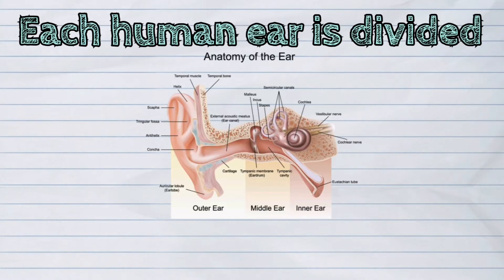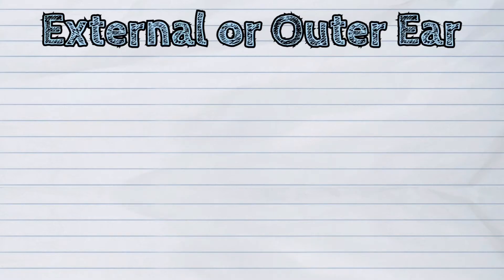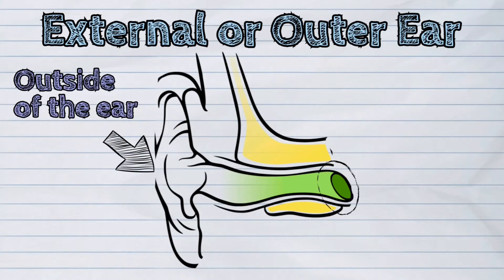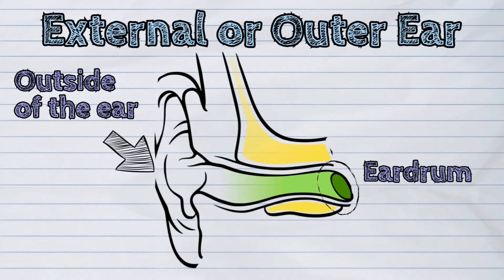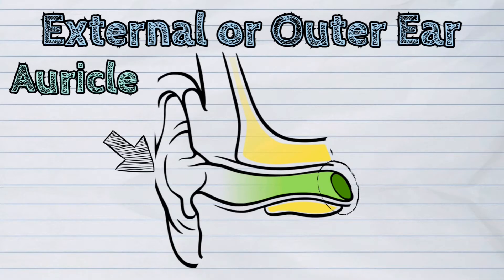Each human ear is divided into three parts. The first part is the external or outer ear. This part extends from the outside of the ear to the eardrum or tympanic membrane. Our ears also have the outer fleshy part called auricle or pinna.